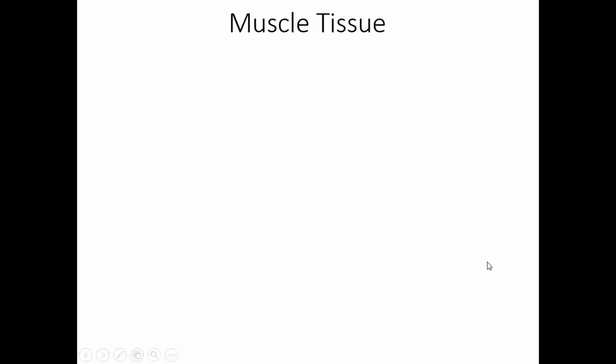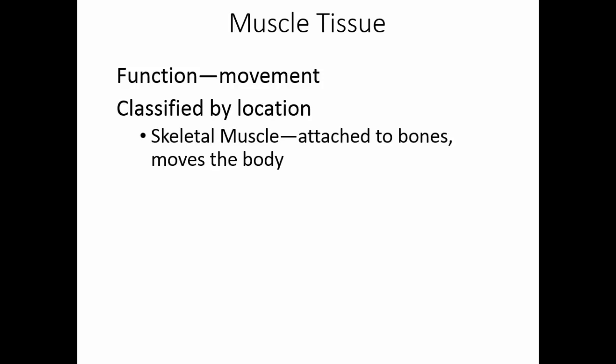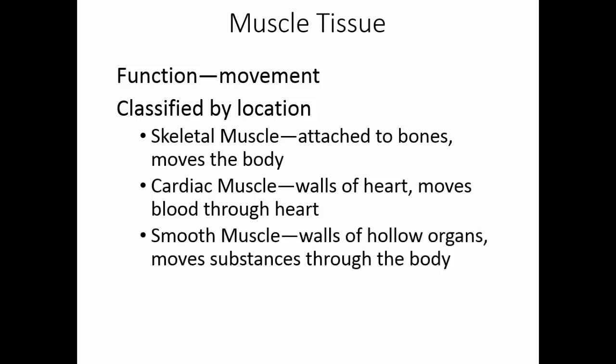The third type of tissue is muscle tissue. Muscle tissue contracts and functions in movement. We classify muscle tissue based on its location. Skeletal muscle is attached to bones — when it contracts, it moves the body. Cardiac muscle is found in the walls of the heart — when it contracts, it pumps blood. And smooth muscle is found in the walls of hollow organs, moving substances through tubes in the body.